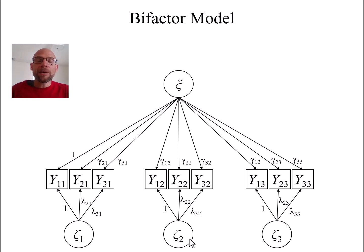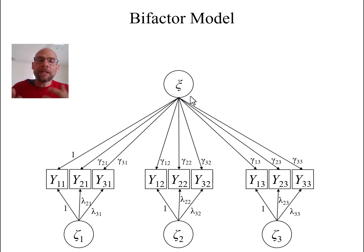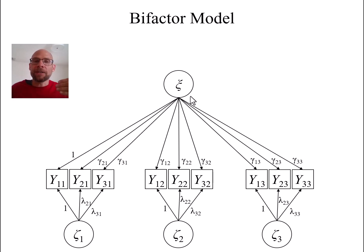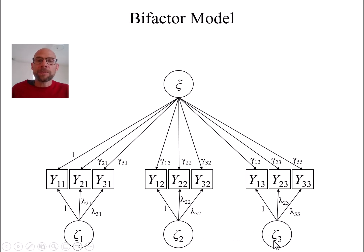For example, with subjective well-being we know there is a trait component where individuals differ, regardless of time point, in their typical level of subjective well-being — there are people who are generally happier and people who are generally unhappy. This general component of happiness is reflected by the trait. But in addition to that typical level, there is also a situation-specific deviation. For example, how did you sleep the previous night? A bad night of sleep might draw your subjective well-being down relative to your typical level.